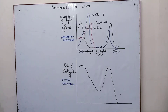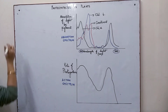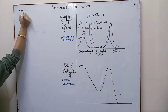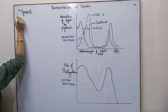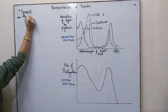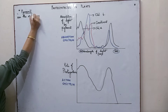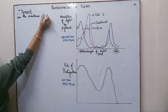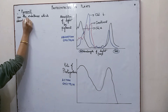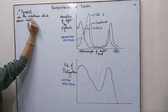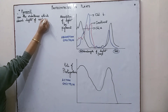Photosynthesis is an important phenomenon taking place in plants. We have been studying in a previous video the importance of photosynthesis, why it is important, the basic mechanism, and the site where photosynthesis takes place. The process of photosynthesis involves various pigments, which are substances that absorb visible light of certain wavelengths.